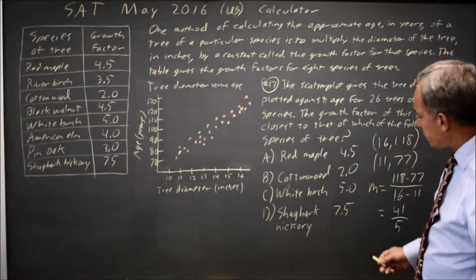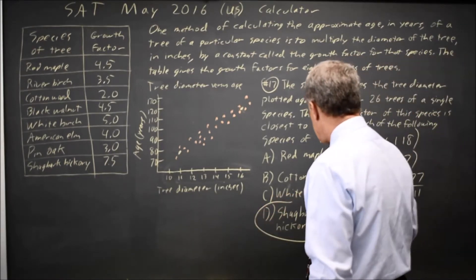Which is closest to 7.5, so this tree would be a Shagbark Hickory.